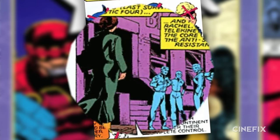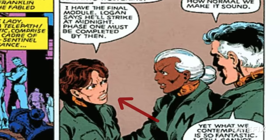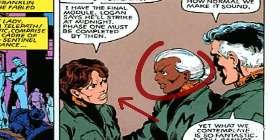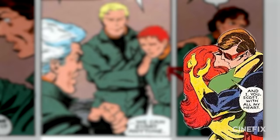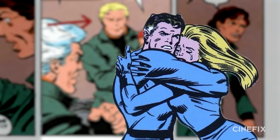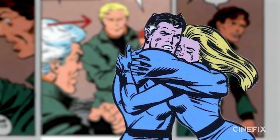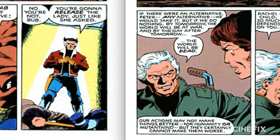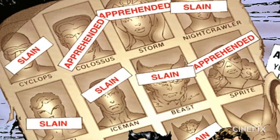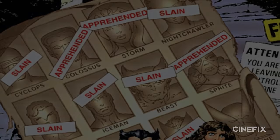The remaining survivors include Kitty Pryde — now all grown up and going by Kate Pryde — Storm, Colossus (who Kitty Pryde is married to, by the way), Rachel Summers (Cyclops and Jean's daughter), and Franklin Richards, who is the Fantastic Four's Reed and Susan's kid. Both of those kids are in a relationship, by the way. You've also got Wolverine and Magneto — in a wheelchair, no less. Everyone else is implied to either be dead or imprisoned.